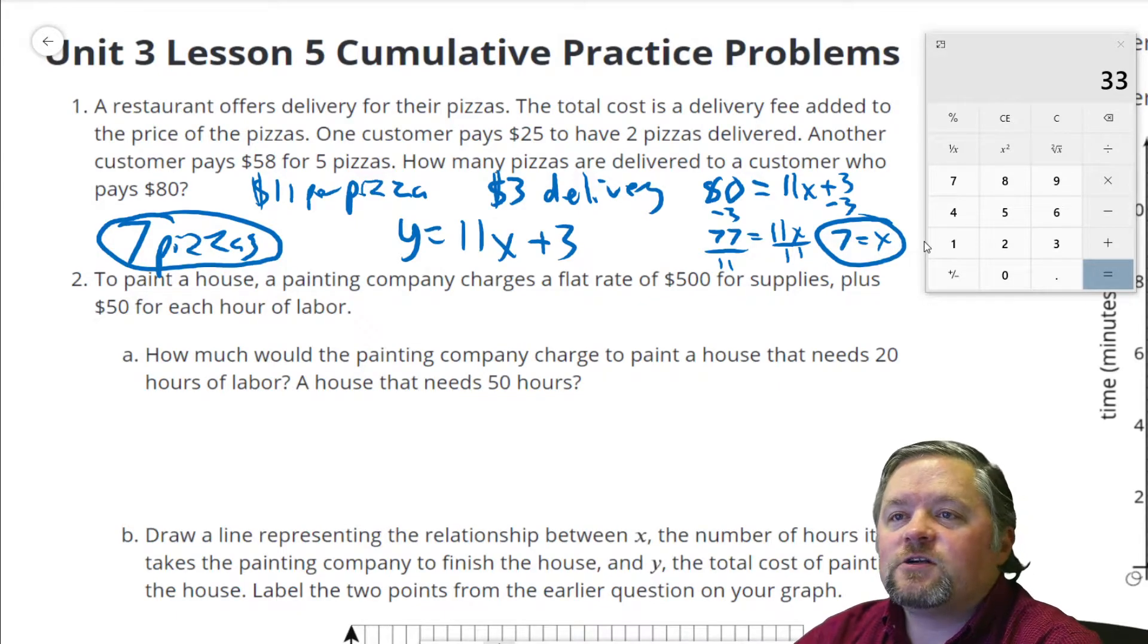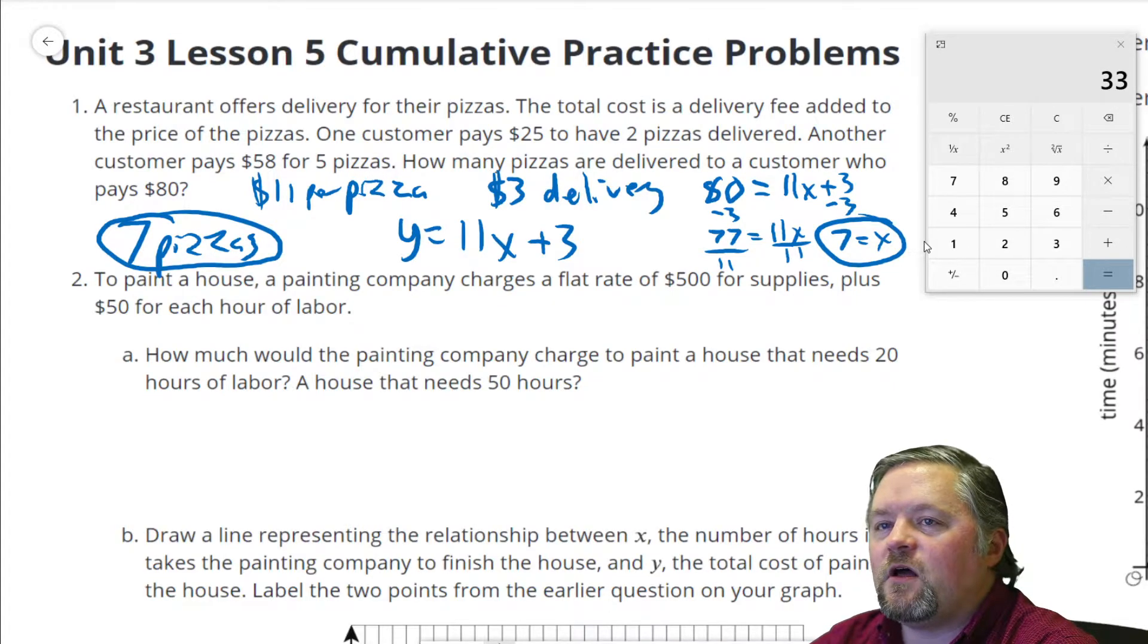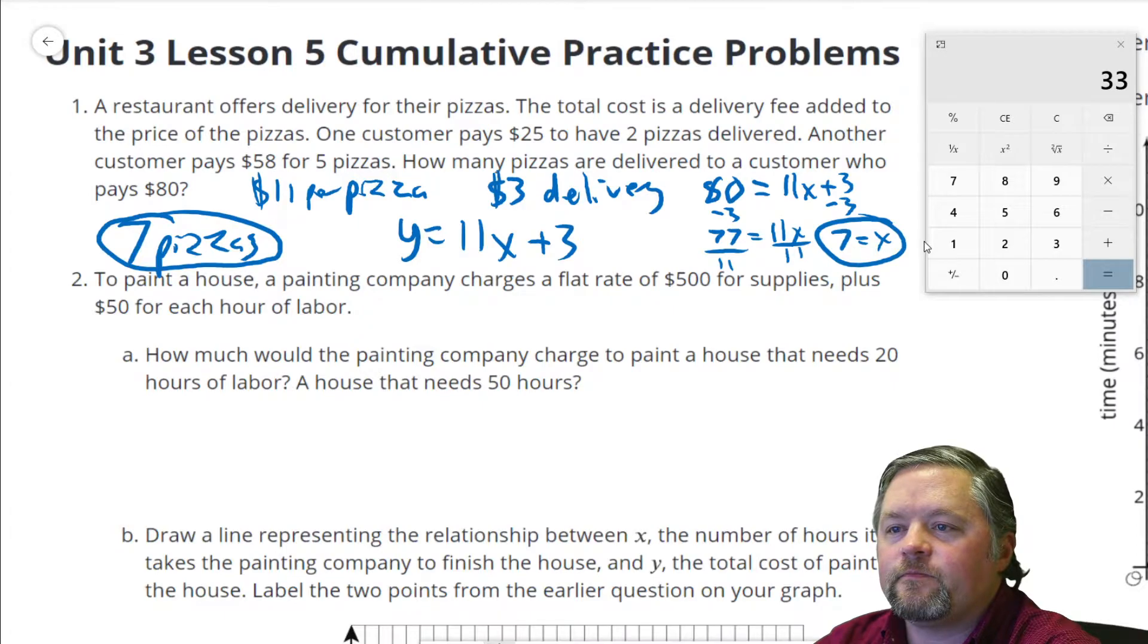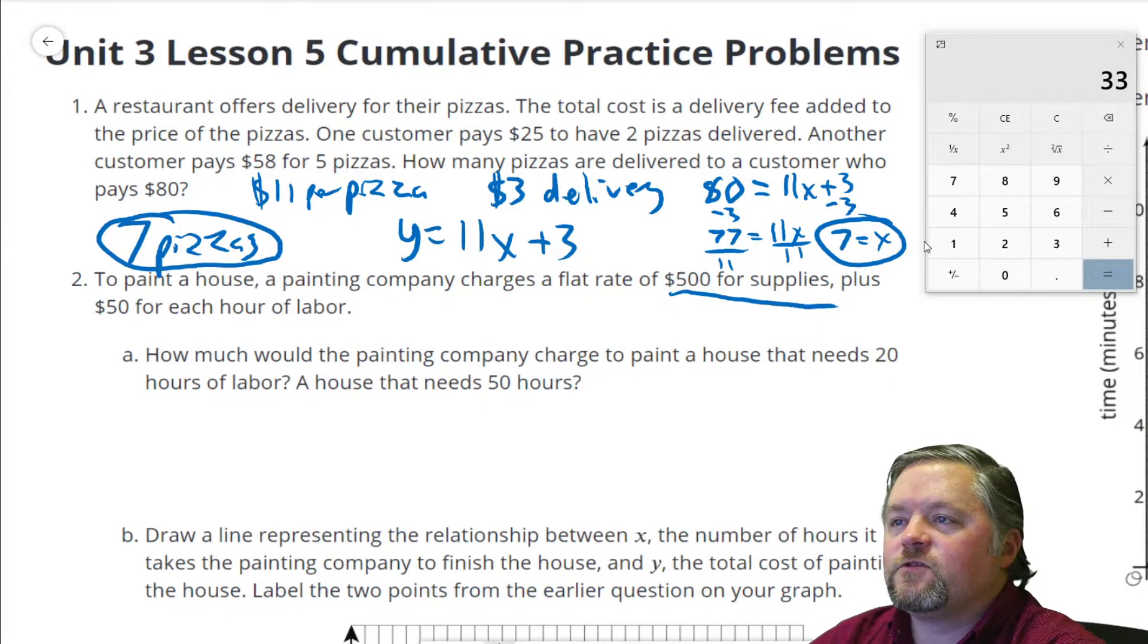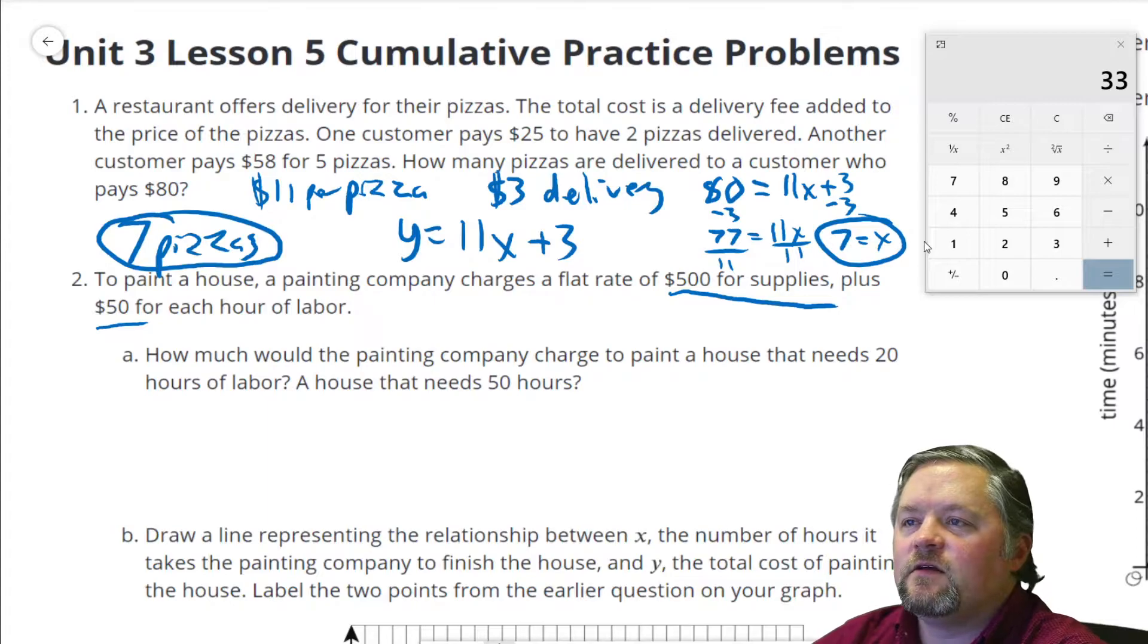Okay, next question. To paint a house, a painting company charges a flat rate of $500 for supplies, plus $50 for each hour of labor. $500 for supplies is our starting point, starting value, y-intercept. $50 for each hour of labor, that means that's going to be our unit rate. Our equation will be y equals 50x plus 500.